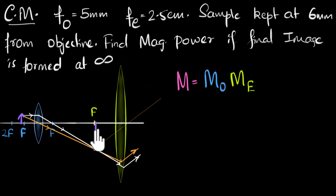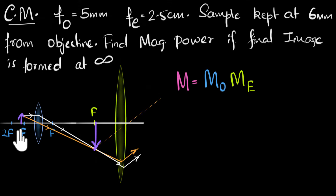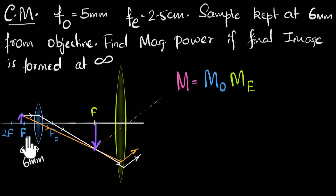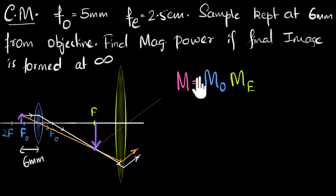We can find the image height to object height ratio because the object distance is given to us as six millimeters, and we know the focal length of the objective. So we can calculate the image distance using the lens formula, and from that use the magnification formula.